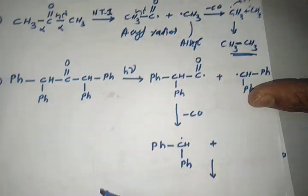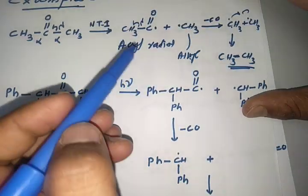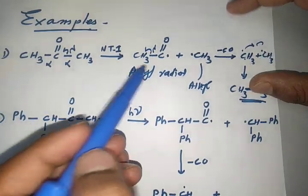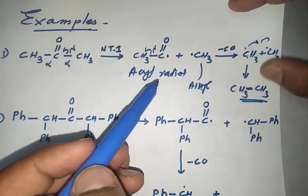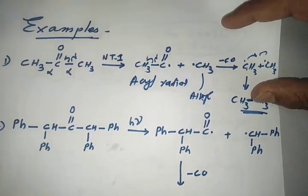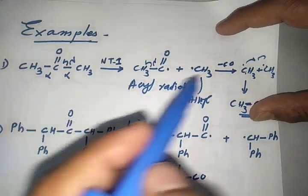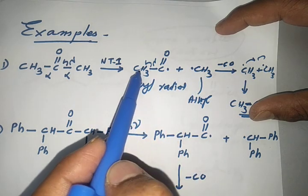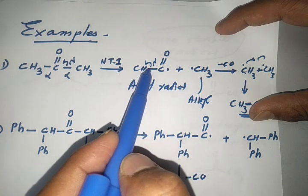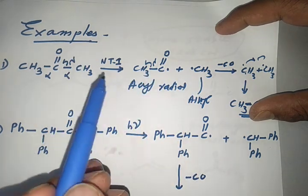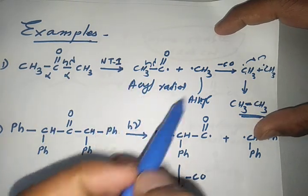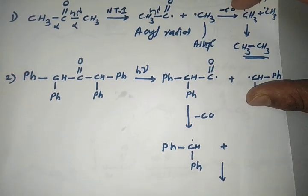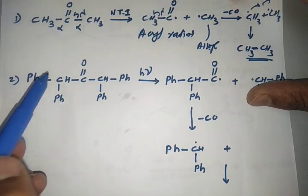In the acetone example, there is only alpha hydrogen present. The methyl radical can abstract this hydrogen, resulting in the formation of ketene. This is the outcome of the secondary process for acetone under Norrish Type 1 conditions. Let us now move on to the next example with another carbonyl compound.